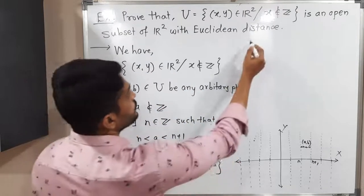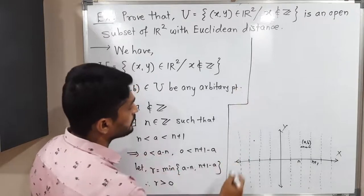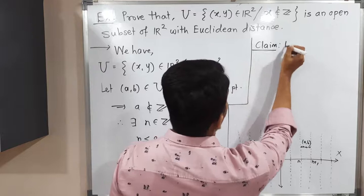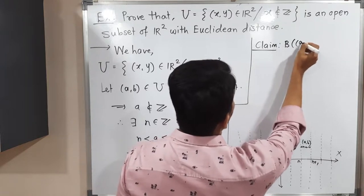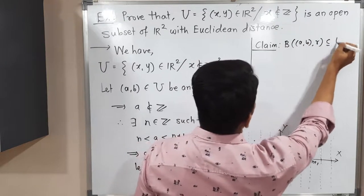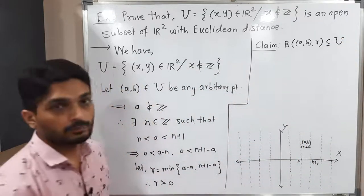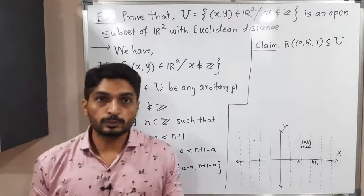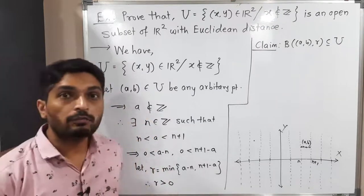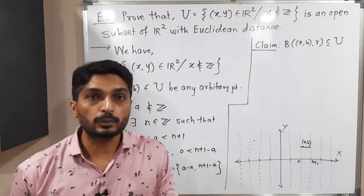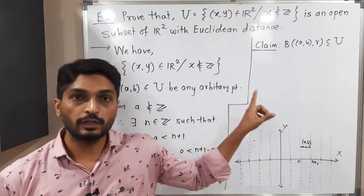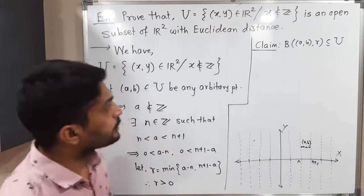Now our claim is: the open ball with center (a, b) and radius r is a subset of U. This is what we need to prove. Our final target is to show U is an open set — we have taken an arbitrary point and found the radius; now we must prove the open ball with center (a, b) and radius r is a subset of U.